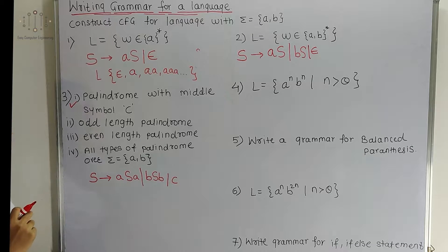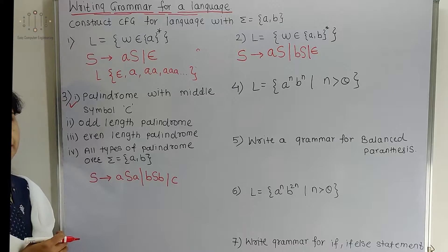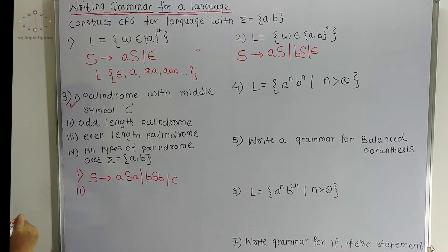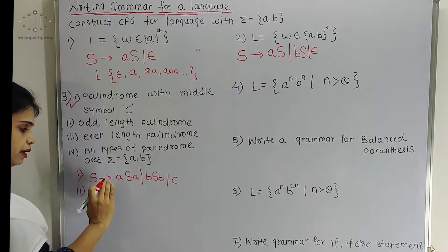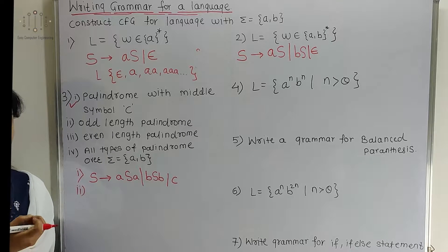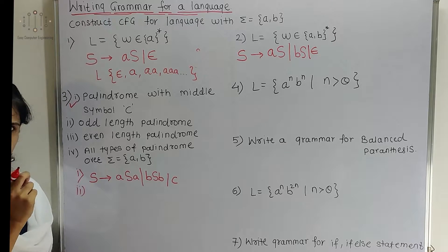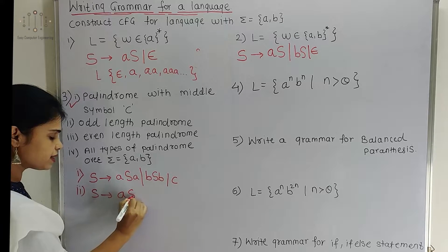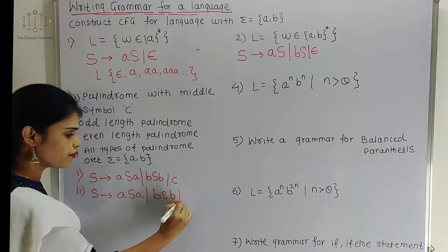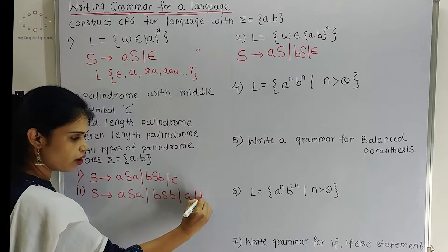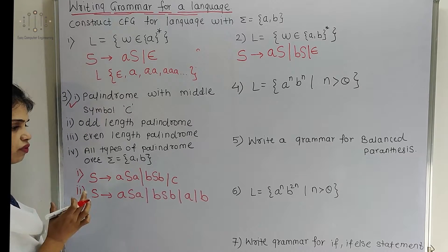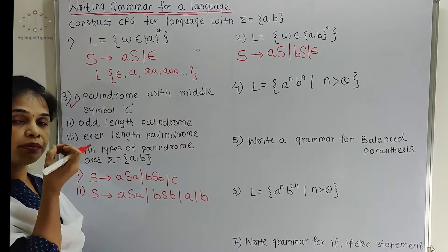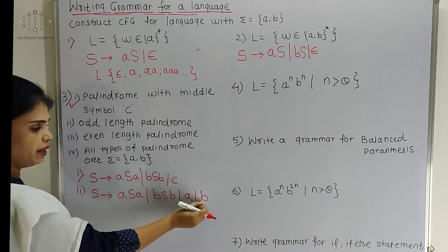Now the second example is odd length palindrome, where sigma equals {A, B}. This is the same as before but no middle character is given, so the middle character may be either A or B. So we write the same productions A S A and B S B, and the middle character may be either A or B. So odd length palindrome means our minimum string will be either A or B.